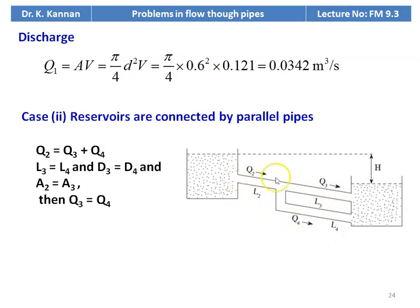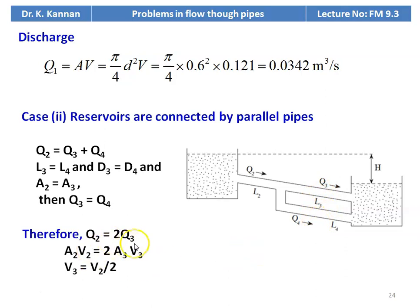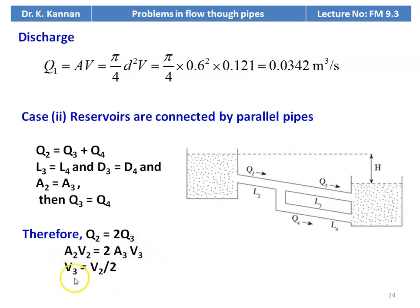Since all the diameters are equal and L3 = L4, the discharge is shared equally: Q3 = Q4. Therefore Q2 = 2 × Q3. Since areas are equal, A2V2 = 2 × A3V3, which simplifies to V3 = V2/2. So the velocity in the second half of the main pipe is half the velocity in the first half.